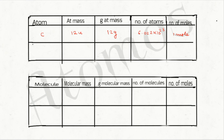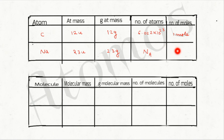For sodium: the atomic mass is 23 units, so the gram atomic mass is 23 grams. Taking 23 grams of sodium gives Avogadro's number of atoms (Nₐ), which equals one mole. So one mole of sodium weighs 23 grams.